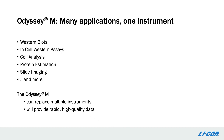In summary, not only does Odyssey-M provide significant improvements for western blots and in-cell westerns by allowing for increased multiplexing with the addition of two visible fluorescent channels, it also opens the door to analyzing many other types of experiments, including cell analysis, protein estimation, and slide imaging, along with many others I didn't have time to discuss today. I hope I've been able to show you that Odyssey-M is a great option for performing a variety of different experiments and can replace multiple other instruments, providing rapid, high-quality data that can streamline your research and help you answer your important research questions efficiently and effectively.